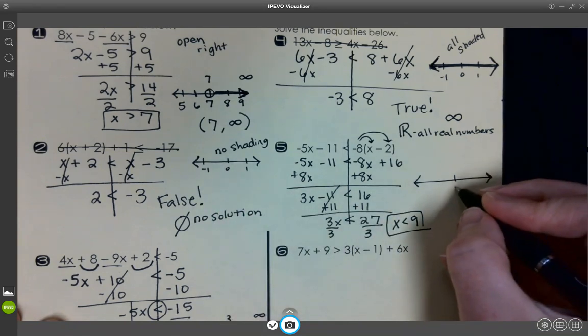So all real numbers, all shaded. False, no solution, none shaded. Let's go back to five. So less than is open. Less is going left. L, L.